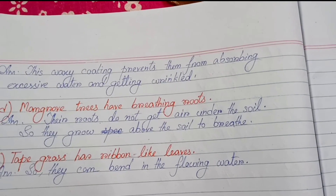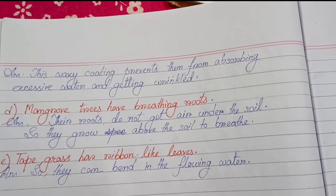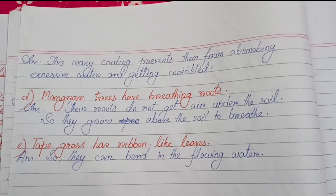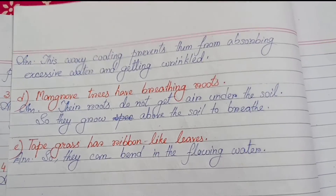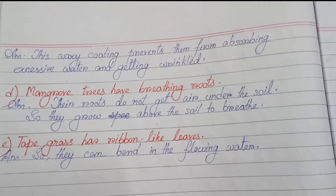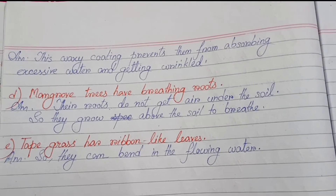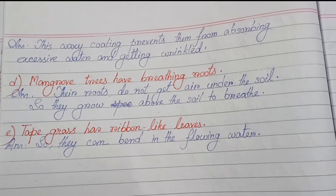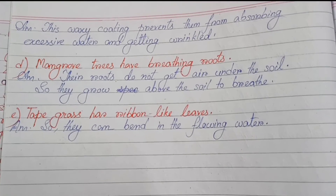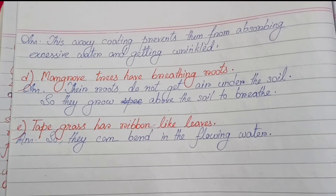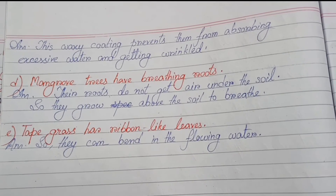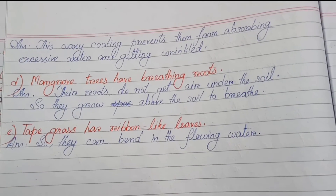C: the leaves of aquatic plants have a waxy coating on them. This waxy coating prevents them from absorbing excessive water and getting wrinkled. D: mangrove trees have breathing roots because their roots do not get air under the soil, so they grow above the soil to breathe. E: tape grass has ribbon-like leaves so they can bend in the flowing water.